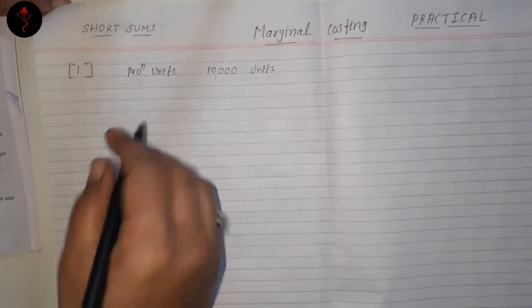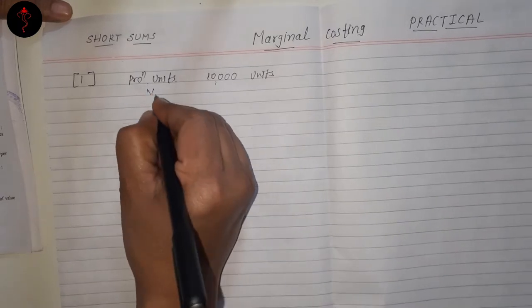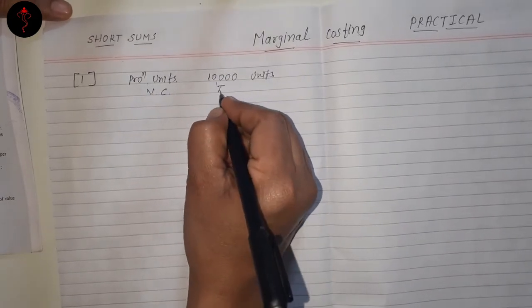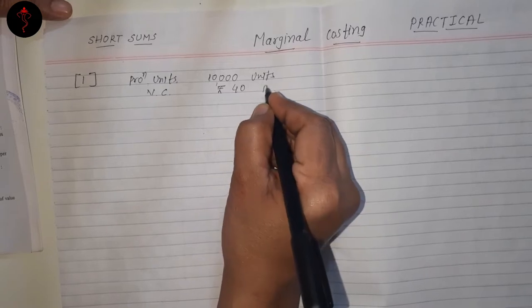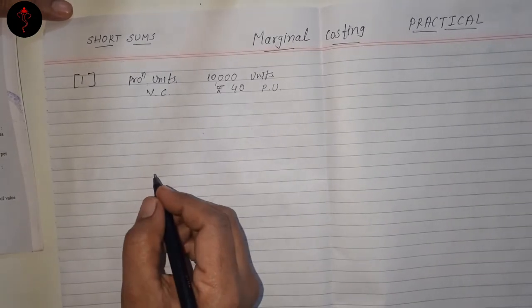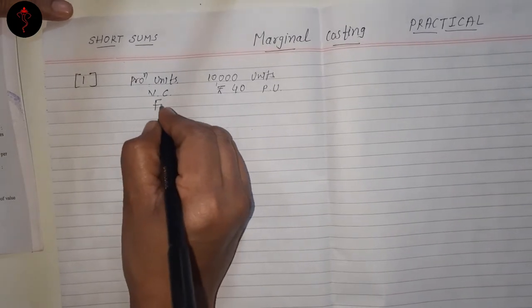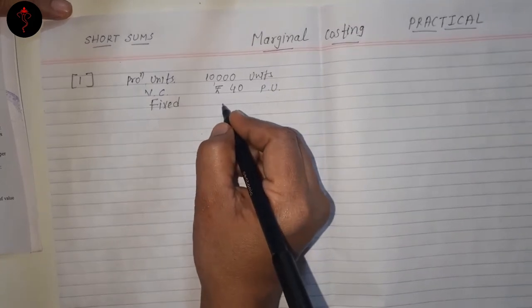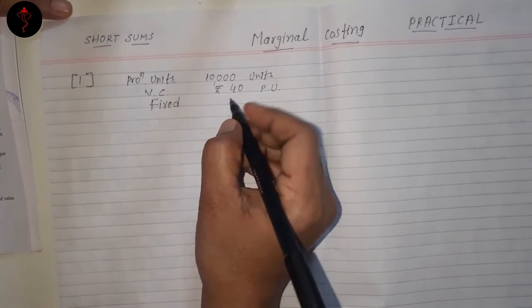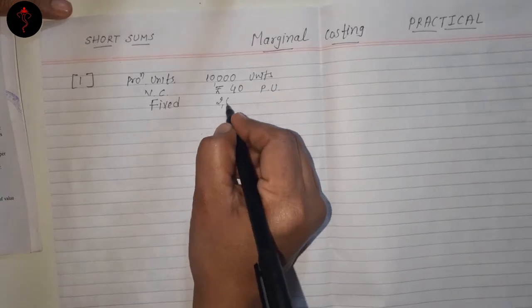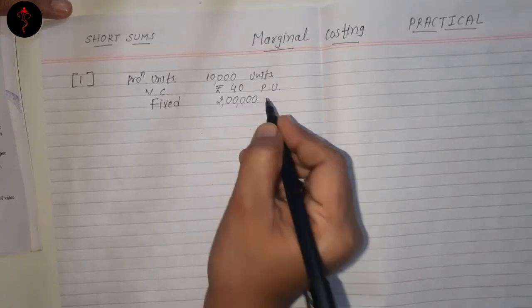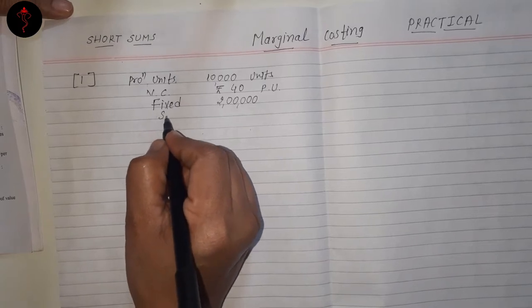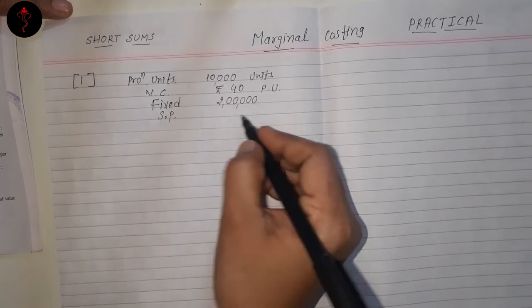The second is variable cost, which is given: Rs. 40, that is per unit. Then we have fixed expense, and that is Rs. 2 lakh in total. And your selling price, that is also per unit: Rs. 60. This information we have.